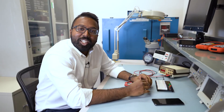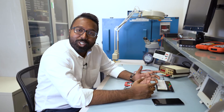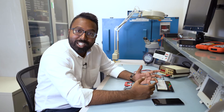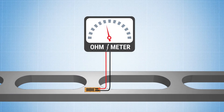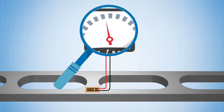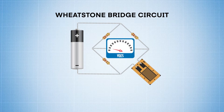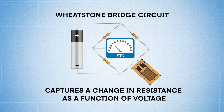A strain gauge by itself acts like a variable resistor whose value changes when the strain gauge sees deflection or deformation. But since strain-induced resistance changes are extremely small, the best way to capture those changes is by using a Wheatstone bridge circuit, where we can capture the change in resistance as a function of change in voltage.